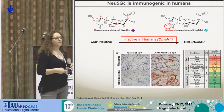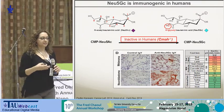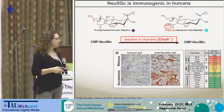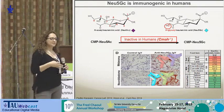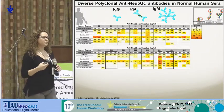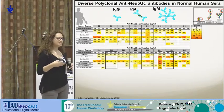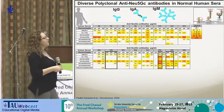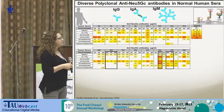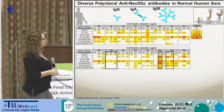Once you consume red meat, Neu5GC gets incorporated and is expressed on the cell surface of cancer cells. The enzymatic machinery doesn't understand the difference between Neu5AC and Neu5GC. However, the immune system can see this difference and generates multiple antibodies against this sugar expressed on the cell surfaces. If you analyze human sera, you will see many different types, isotypes, and different antibodies that can recognize many sugar structures on these cancer cells. These antibodies can recognize different sugar chains — not just one antibody recognizing the terminal sugar, but rather different sugar structures.